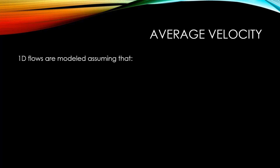When we are modeling open channel flows, if we choose to model them as one-dimensional, we will most likely assume that the velocity across an entire cross section is equal to the average velocity at that cross section. Every time you see a velocity term in an open channel and we're looking at it as a one-dimensional flow, please assume that that velocity is equal to the average velocity of a cross sectional area.